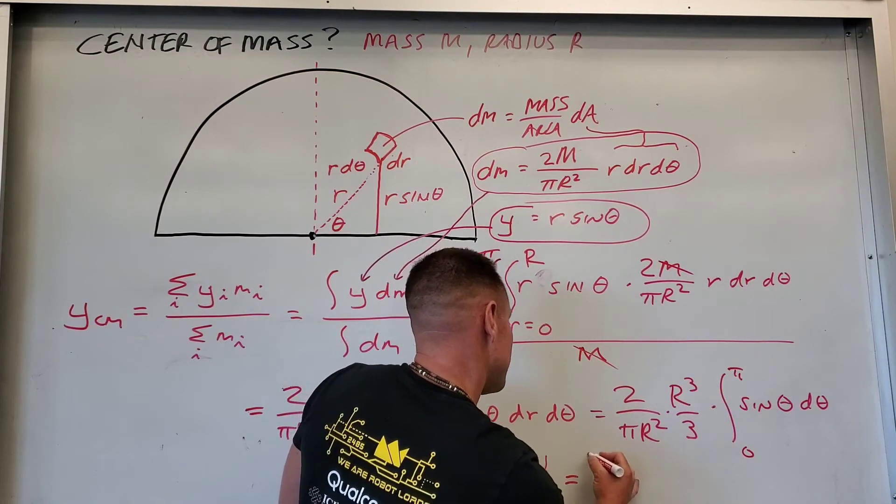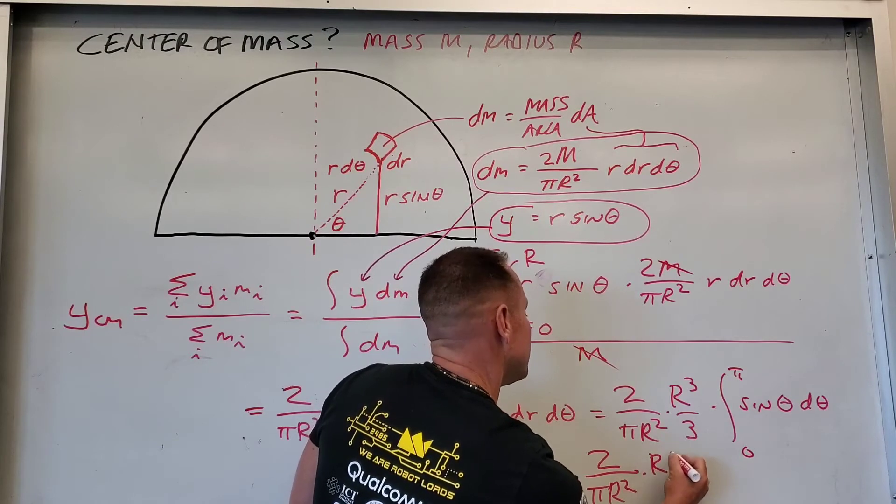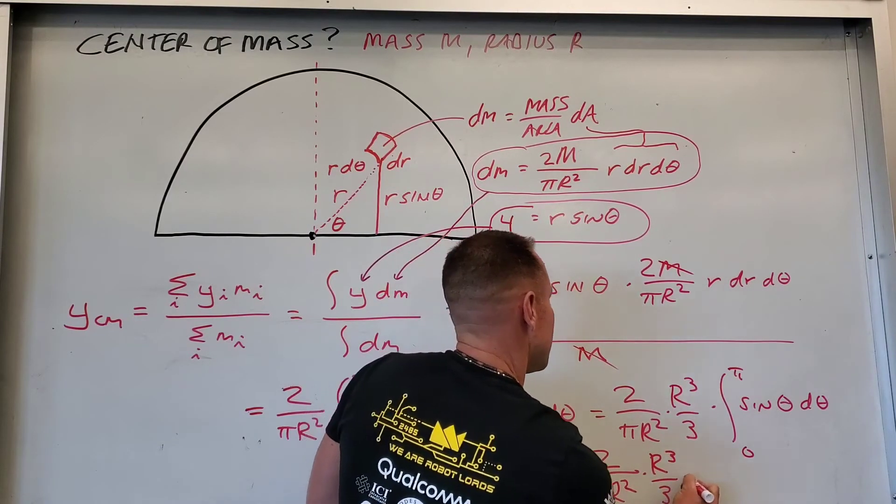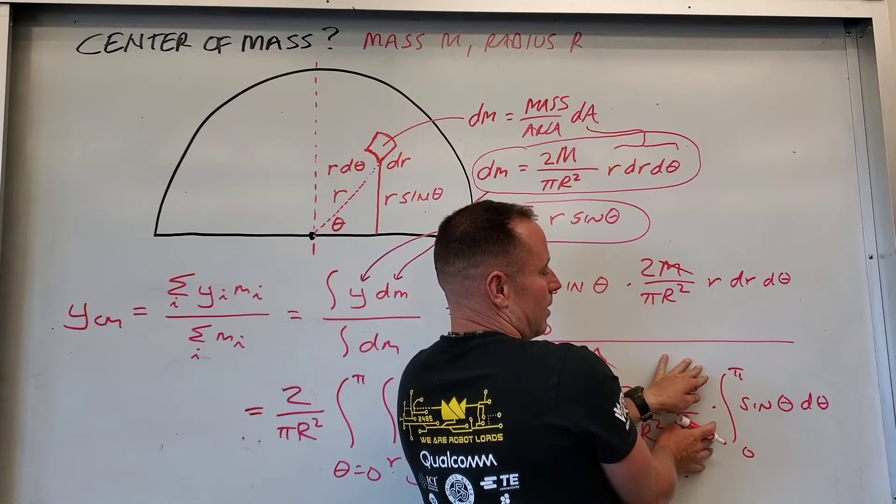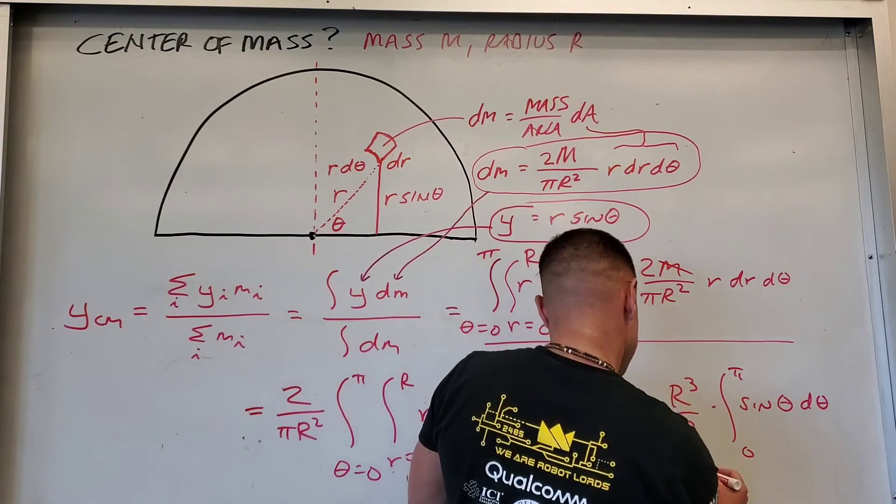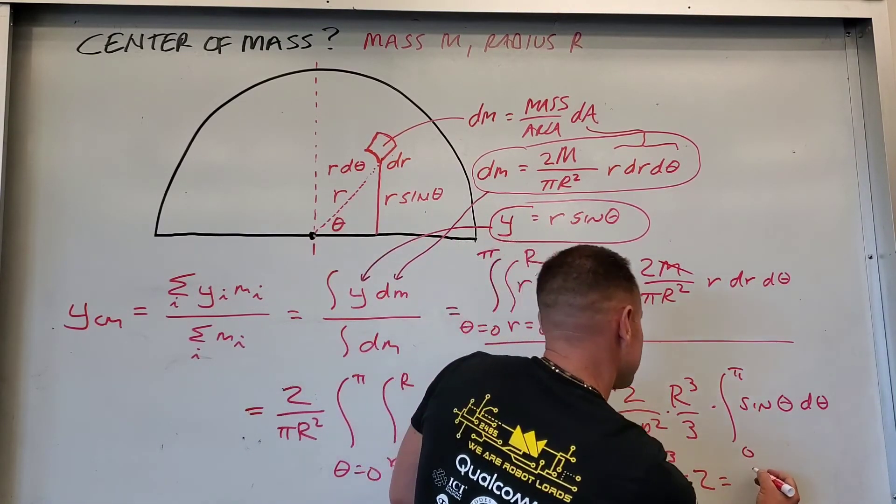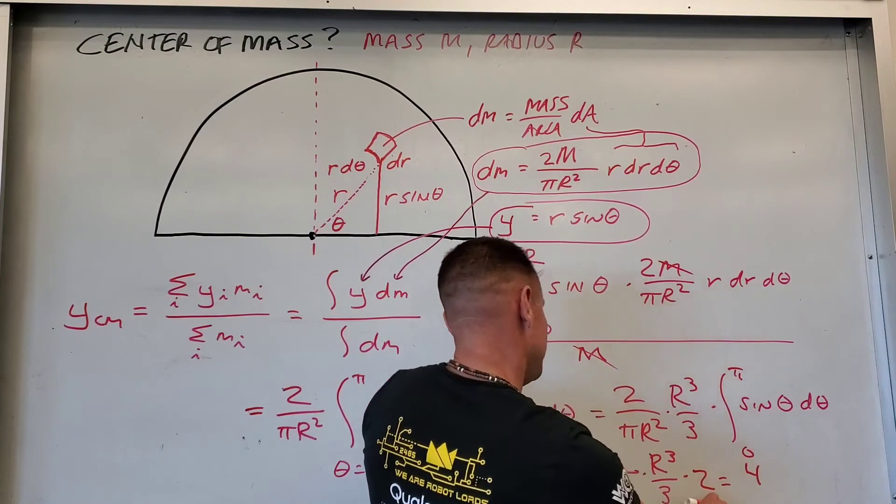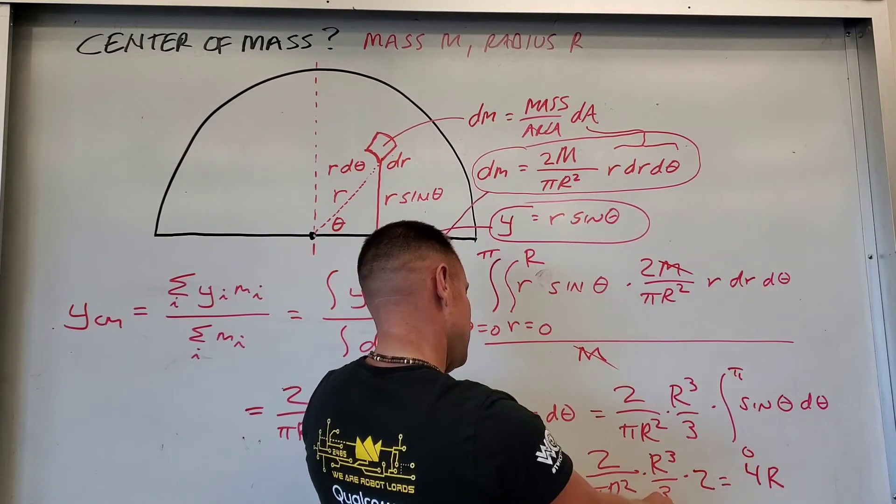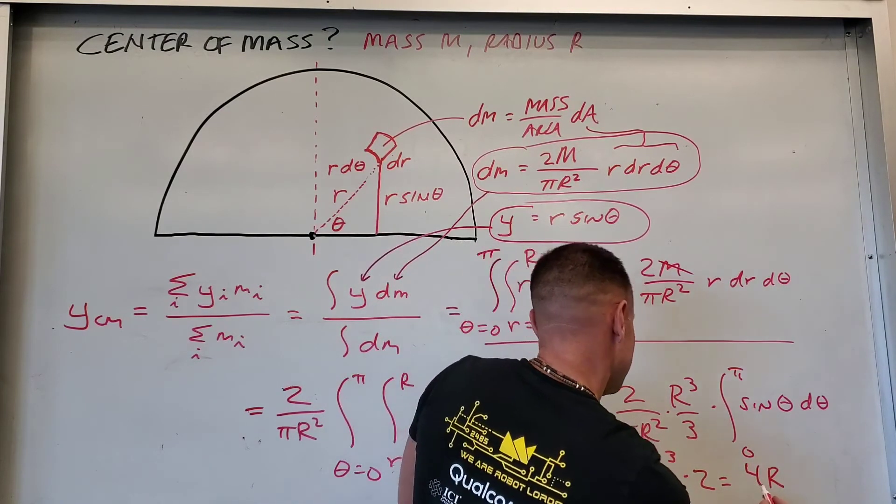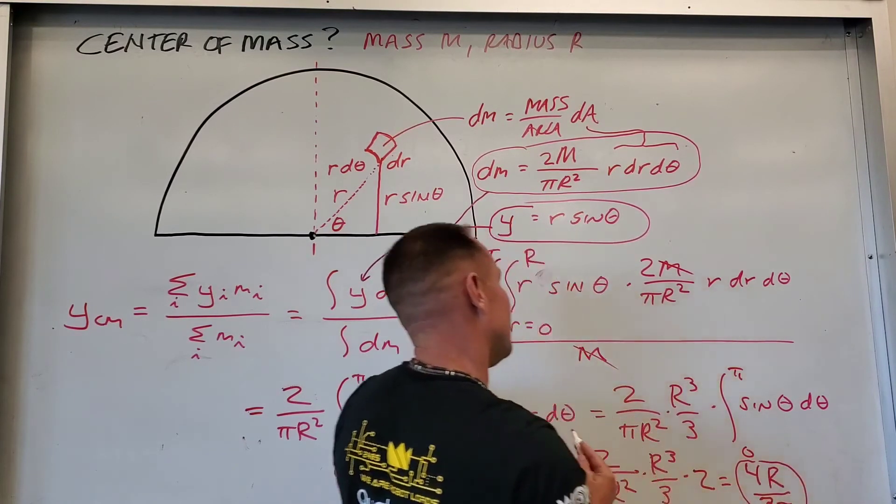And so if I finish this up, we've got 2 over π r squared times r cubed over 3, I guess I could have simplified some of that, and then times this integral from 0 to π over sin θ dθ. That's just going to give you a 2. You'll get a 1 minus a negative 1 which will just give you a 2. And so then ultimately what you then get is, finally, when all the smoke clears, up top you're going to get a 4 from 2 times 2. You are going to get an r up top, which it should go like some fraction of the radius. And in the bottom you're going to get a 3π. So 4r over 3π. That is the y coordinate of the center of mass.